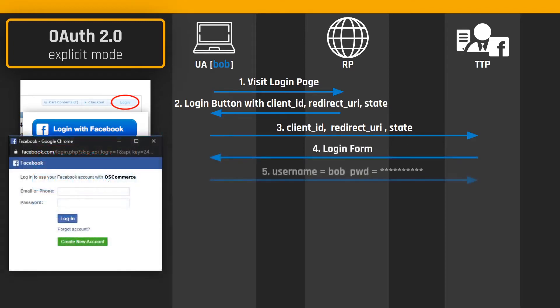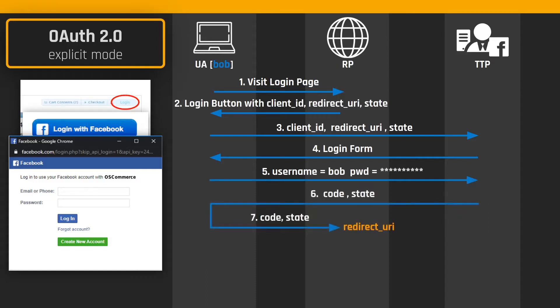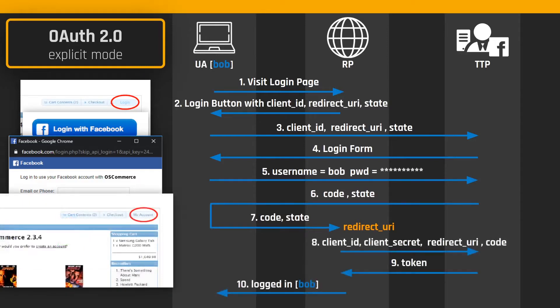The user authenticates with the trusted third party, which redirects the user back to the redirect URI of the RP with an authorization code. The RP verifies the validity of the code in a backchannel exchange with the TTP, which acknowledges the validity of the code by generating an authentication token. Finally, the website confirms the successful authentication to the user agent.